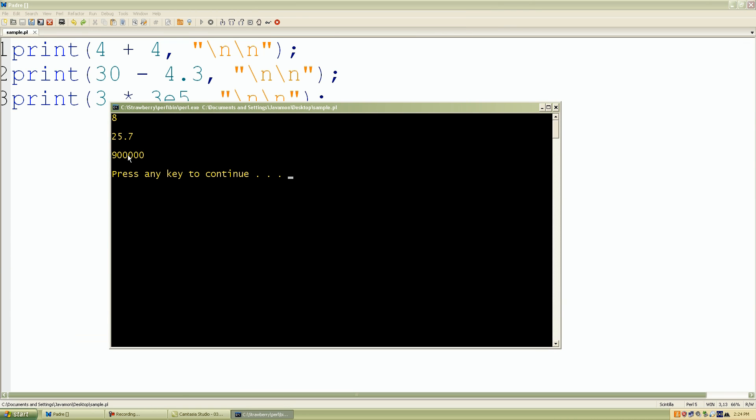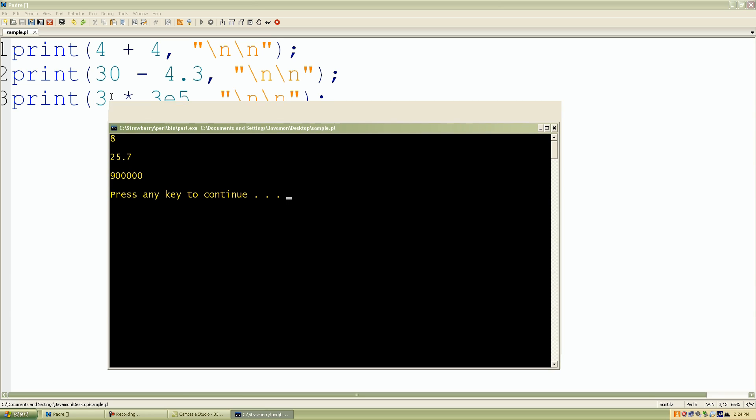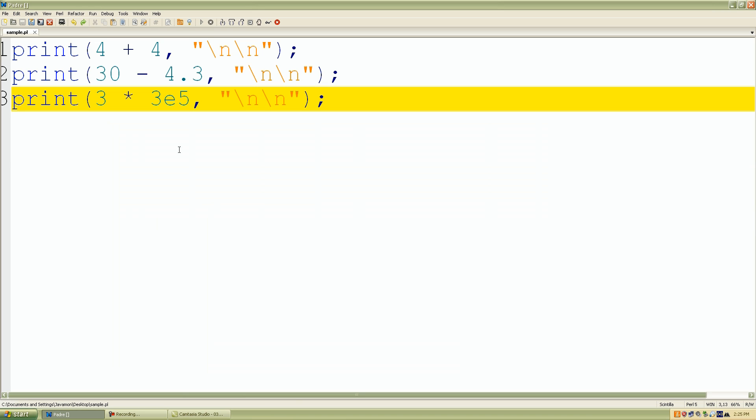Look what we have. So for our third one, I guess it's 900,000. So 3 times 3 times 10 to the fifth power is going to be 900,000. So again, we can use the mathematical operations on whole numbers and floating point numbers as well.